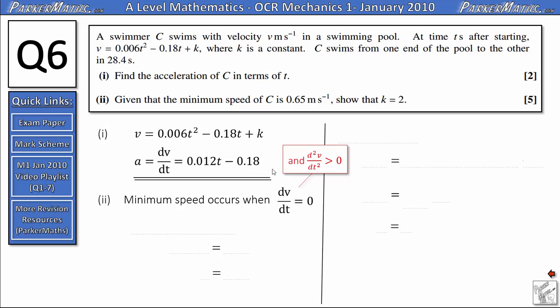We've already found dv dt, that's this expression here, so we just need to set that equal to 0. Adding 0.18 to both sides gives us 0.012t equals 0.18, and you could use your calculator for this but it's not really necessary. Multiply both sides by 1000, that will give 12 here and 180 here, and then do 180 divided by 12 which gives us 15 seconds.